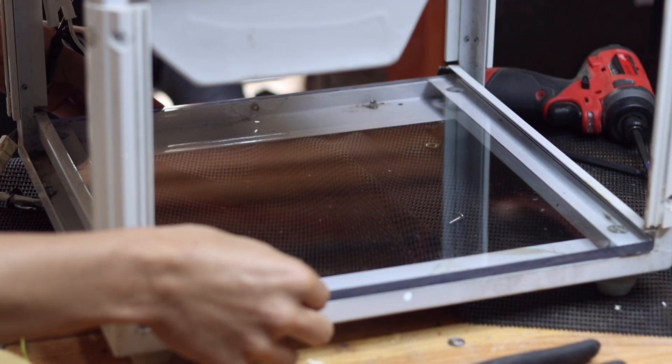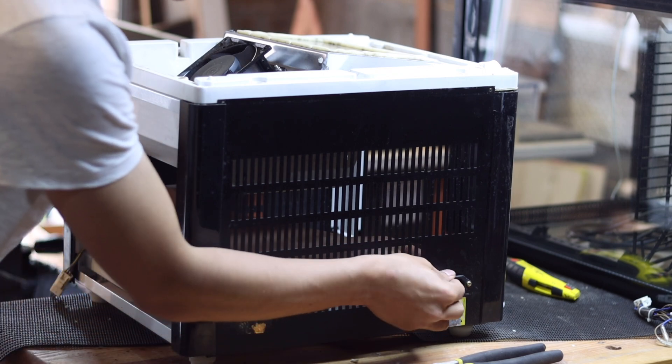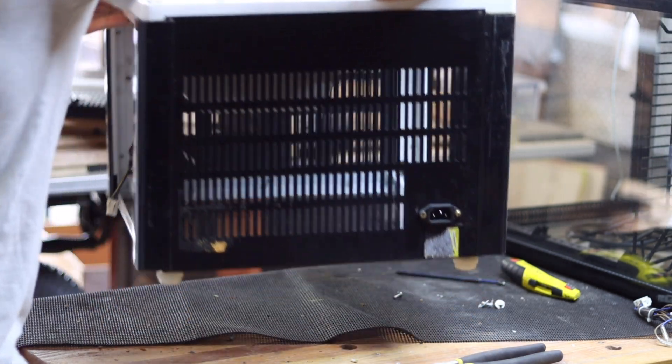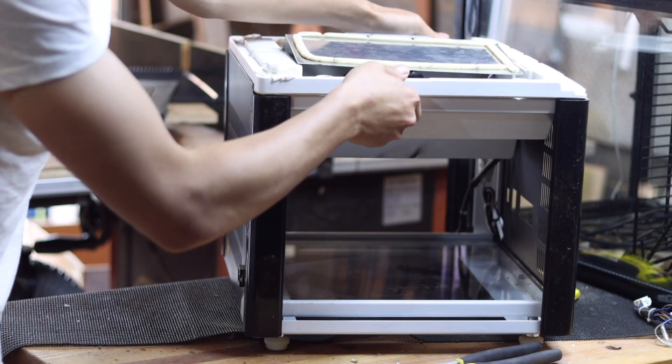The way this incubator is going to receive power will be the same as the original fridge, through an IEC C14 inlet. I want to keep this feature so that the power cord can be unplugged for transport.